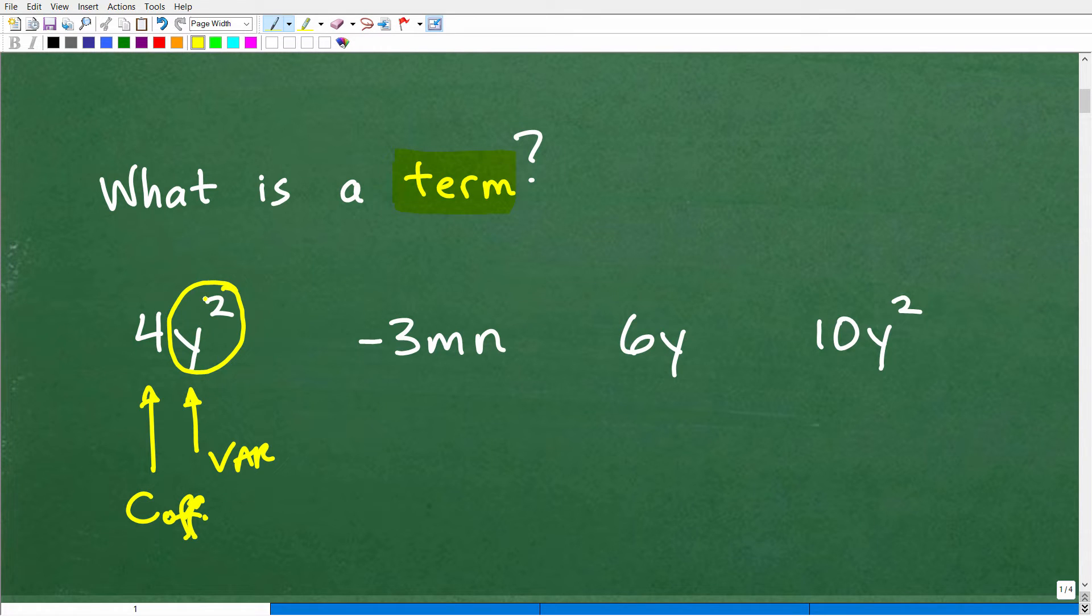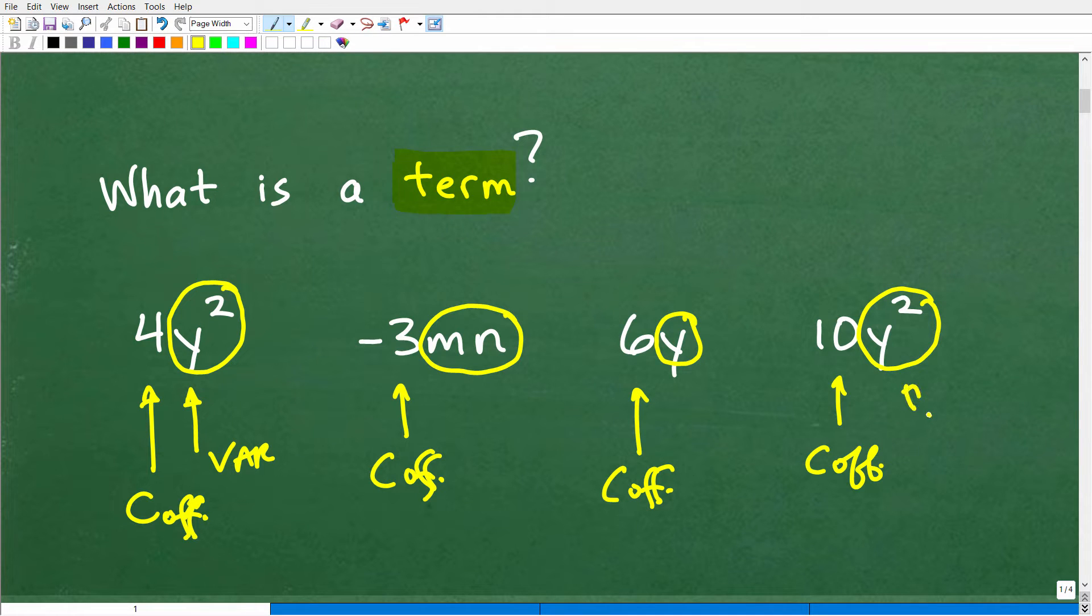So this number we call a coefficient. That's called a coefficient, and it's in front of some variable or variable combination. So this is the term 4y². Now, your variable part of this term can be all sorts of things. Let's take a look at some other examples here. So here, negative 3 is the coefficient of this particular term. And then the variable part of the term is m and n. And by the way, let me just mention that this 4y² means 4 times y². This negative 3mn is negative 3 times m times n. So again, in algebra, you have a coefficient which refers to the number in front of the variable part. Let's take a look at this one right here. You can see 6y, 6 is the coefficient, and then we have the variable part y. And then over here, we have 10, that is of course the coefficient, and then the variable part is y². There's the variable part, there's the variable part, and here is the variable part.